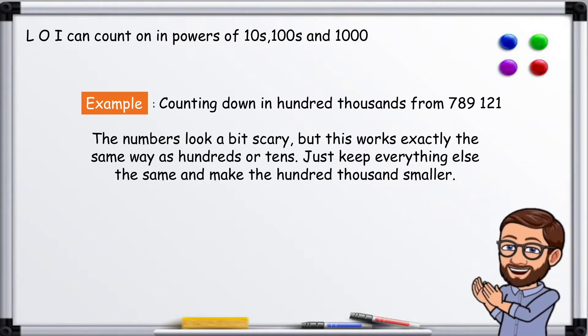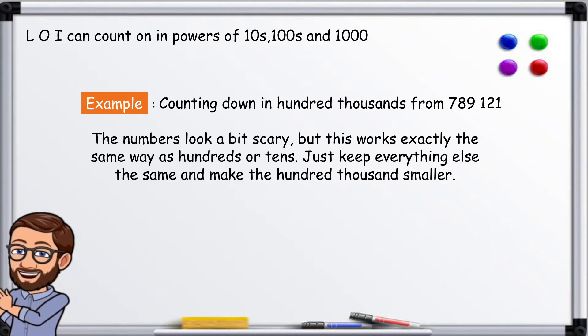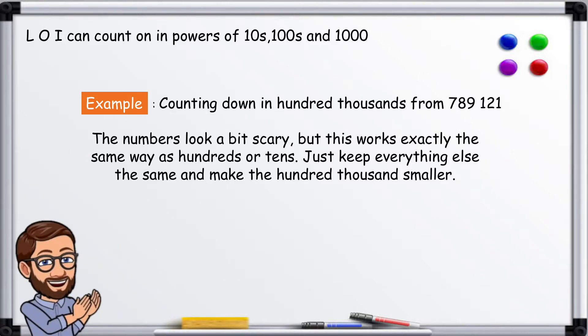Counting down in 100 thousands from 789,121. The numbers look a bit scary, but this works exactly the same way as hundreds or tens. Just keep everything else the same and make the hundred thousands smaller.